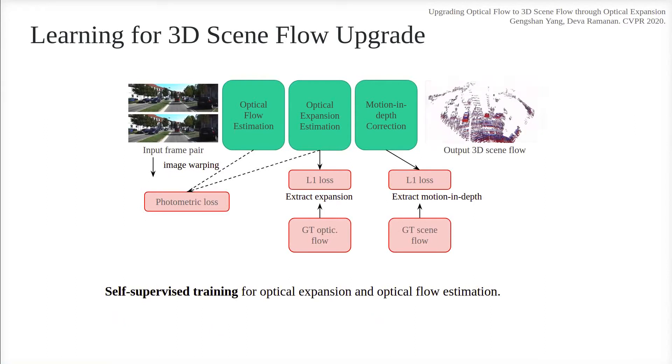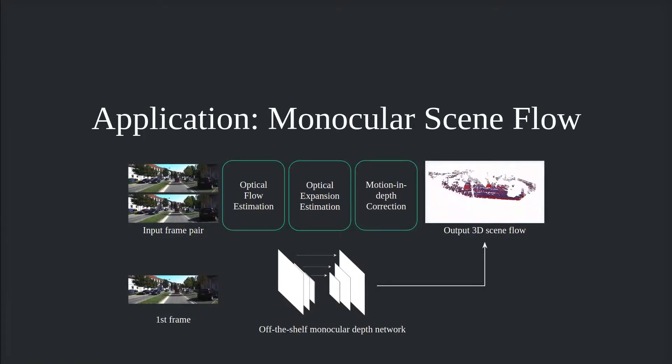Now we show experiment results. For the task of monocular scene flow, we use an off-the-shelf monocular depth network to predict the depth at frame one, and use it to upgrade to full 3D.